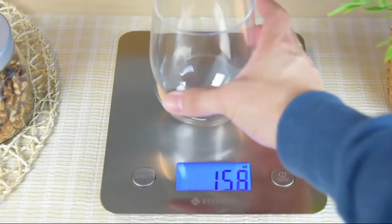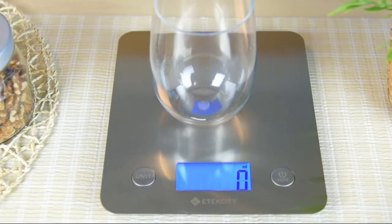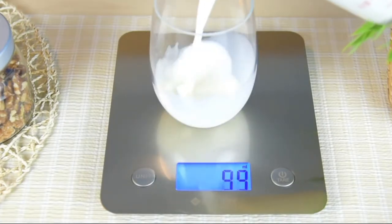To tare weight, place the container on the platform and press the tare button. The display will read zero and you can add the food or liquid into the container.